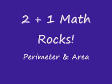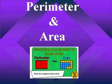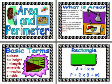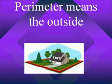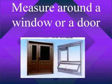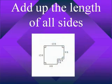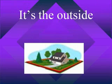Perimeter means the outside. Measure around a window or a door. Add up the length of all sides. It's the outside.